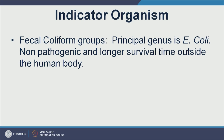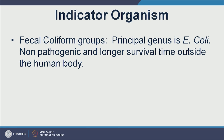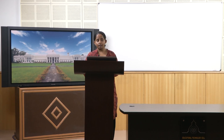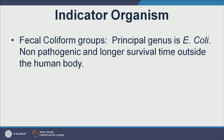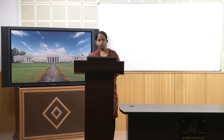We use fecal coliforms to get an idea of fecal contamination. If they are present, we know fecal matter is present and the water is not suitable for drinking. Fecal coliform detection in any water sample should be zero for it to be fit for drinking. The principal genus detected in the fecal coliform test is E. coli (Escherichia coli). It is non-pathogenic in the strain we typically grow, and it survives longer outside the human body than most pathogens.